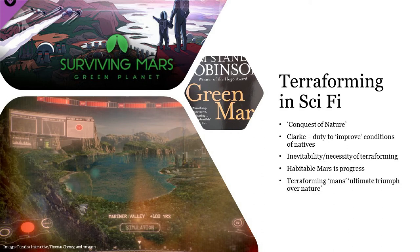Kim Stanley Robinson's Mars Trilogy is probably one of the more thoughtful examinations of Martian terraforming. There is a debate between the Reds — those who want to keep Mars as natural as possible — and the Greens — those who want to terraform Mars, often as quickly as possible — which pervades all three volumes. There's also an interesting potential gender prism: the Reds are led by a woman and the Greens by a man, though that's beyond the scope of this paper. However, the terraformers win. Despite the thoughtful debate, terraforming is viewed as a necessity — the natural outcome. If humans are going to settle Mars, we're going to terraform it.